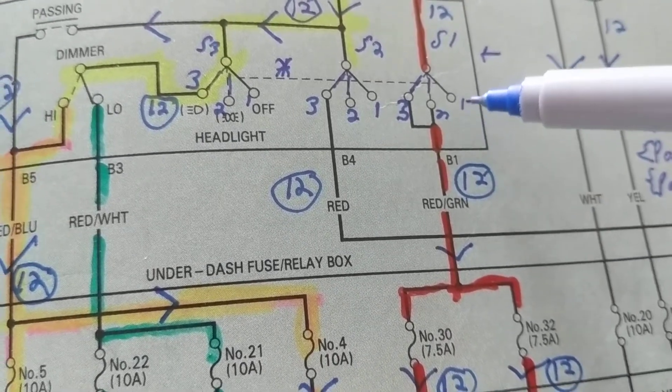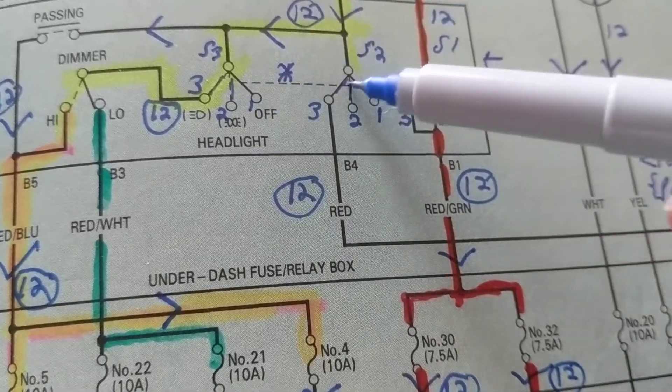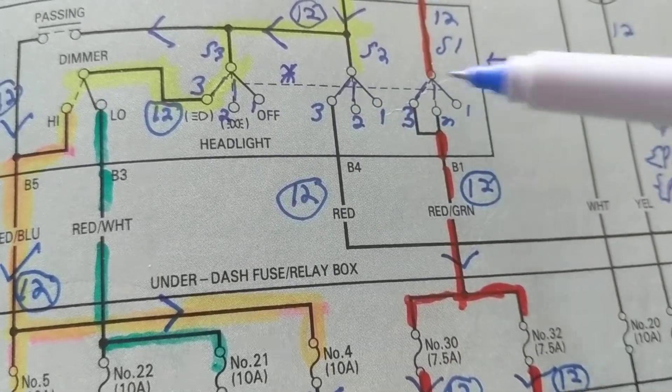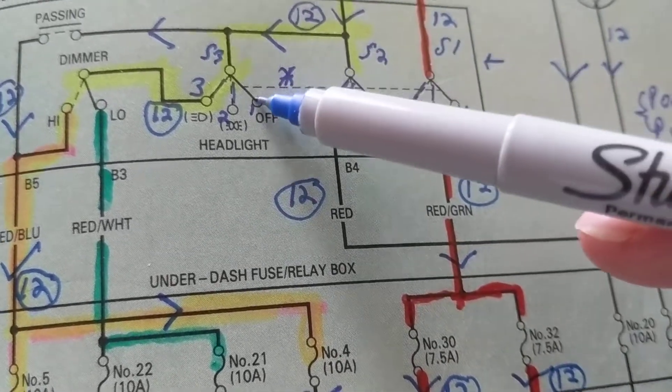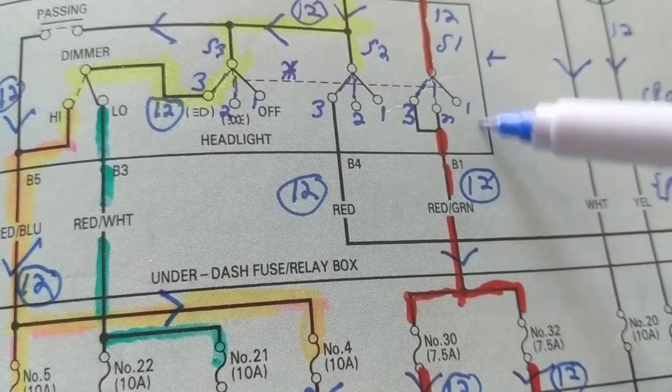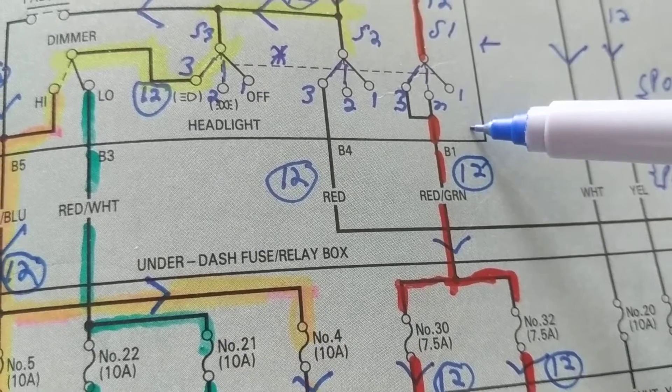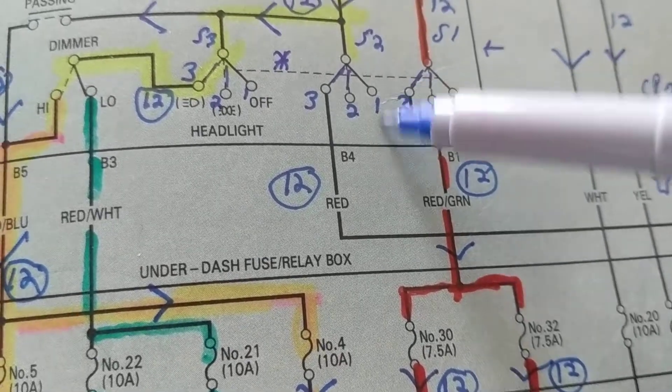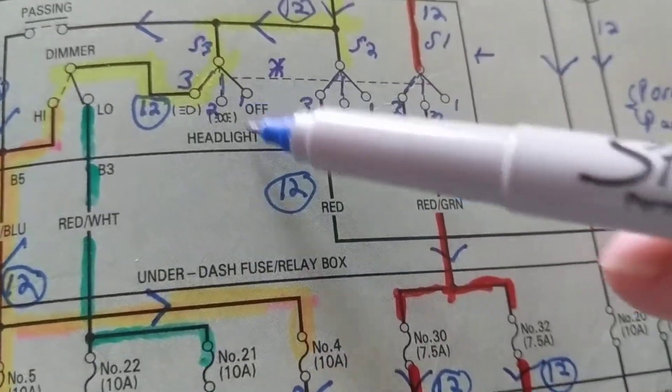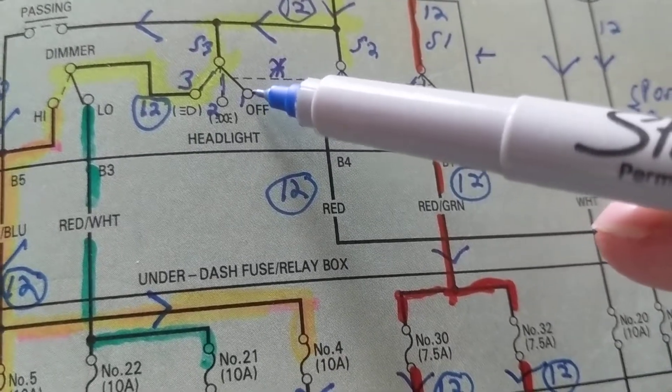You look at the terminal and you see if there's a connection. For example, when this is in position 1, this is 1, this is 1, this is 1, they're all in position 1. There is no line, there is no connection here. There is no connection here. Why is that? Because you're in the off position.